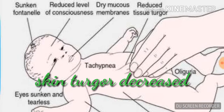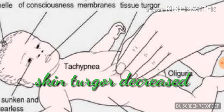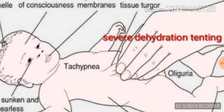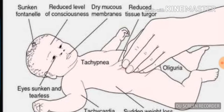Skin turgor is classically elicited in the abdominal wall — we have to pinch the skin of the abdominal wall. If the child has severe dehydration there will be denting of the skin. In moderate dehydration the skin turgor will be reduced. There can be tachypnea and acidotic breathing as the child becomes more and more dehydrated.